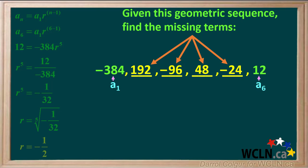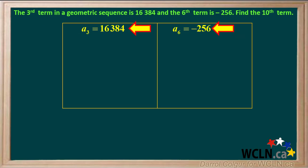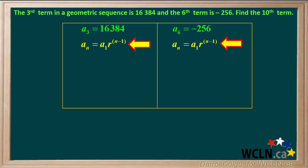Negative 24 times negative 1/2 gives us 12, which is the original term a6. So now we've found the four missing terms in this geometric sequence and filled in the blank spaces with them. Here's another question: we're given that the third term in a geometric sequence is 16384 and the sixth term is negative 256, and we're asked to find the tenth term.